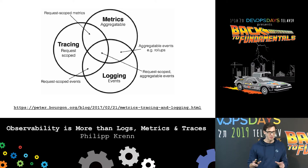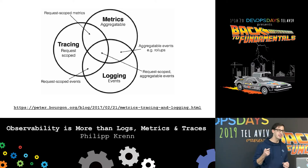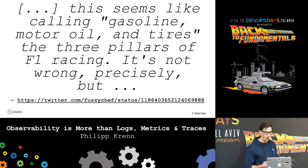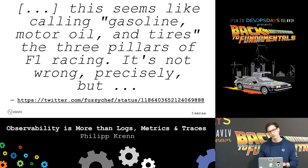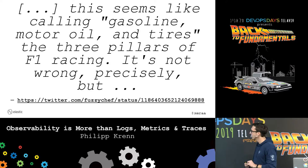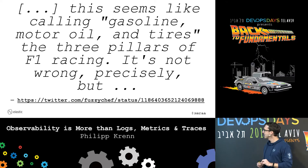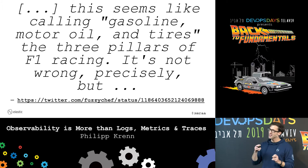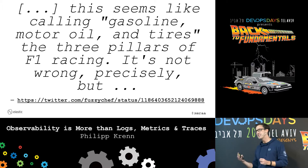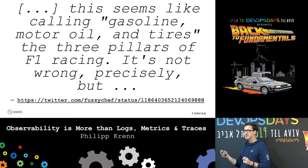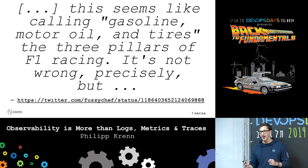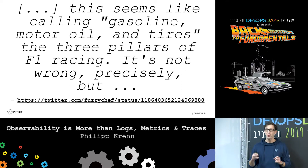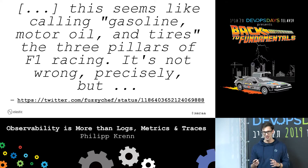So where does this term even come from? It's a bit like saying gasoline, motor oil, and tires are the three pillars of Formula One. This is kind of not totally false, but it's similar to saying logs, metrics, and traces are what makes observability — which is not really the essence of the thing itself.